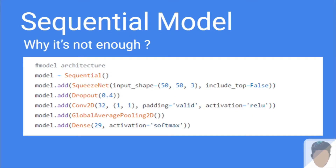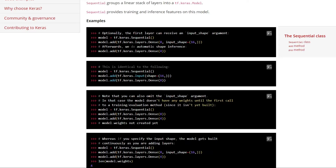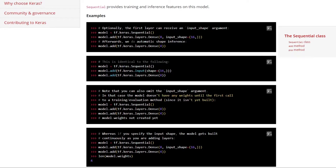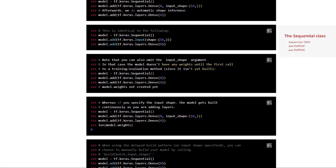We all know sequential models. We have all started our machine learning journey with sequential models — doing linear regression, logistic regression, convolutional neural networks, NLP, and everything using sequential models. Here you can see an example of a sequential model. Going to Keras's sequential class page, we can see the documentation and how we can define each layer and finally get a model.